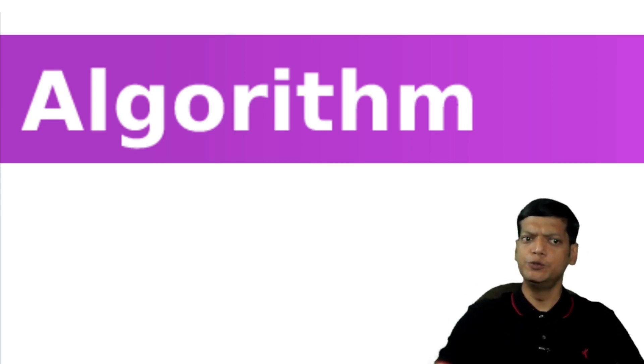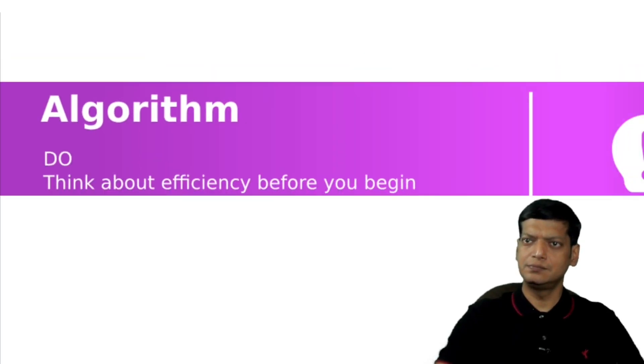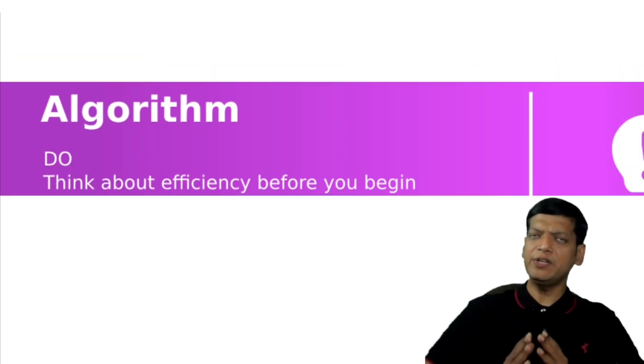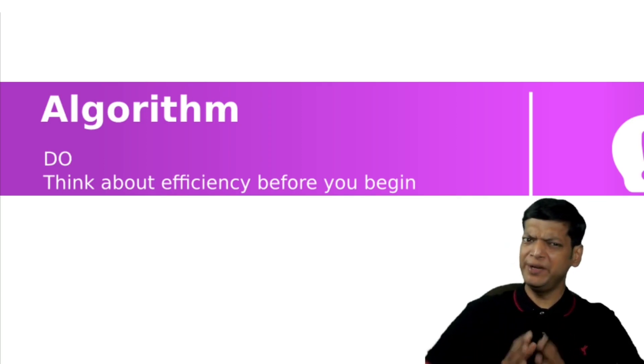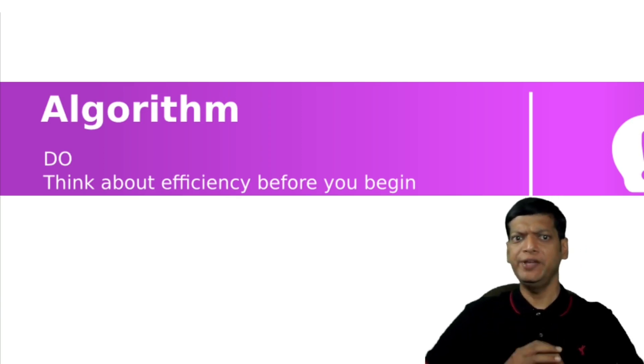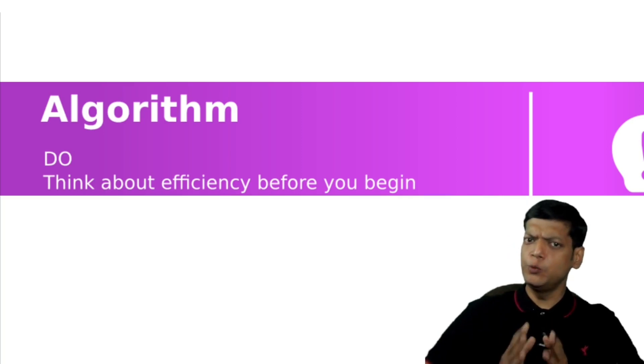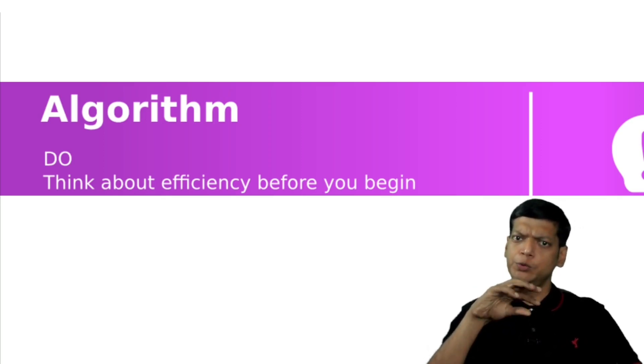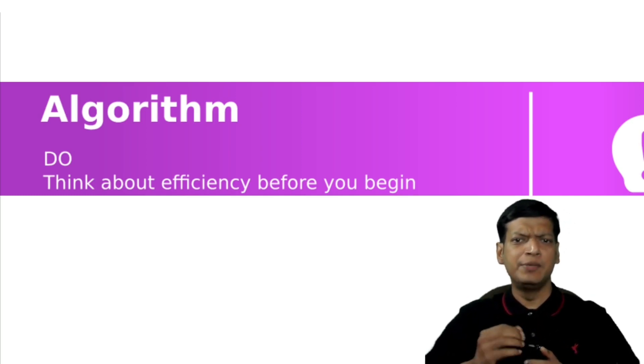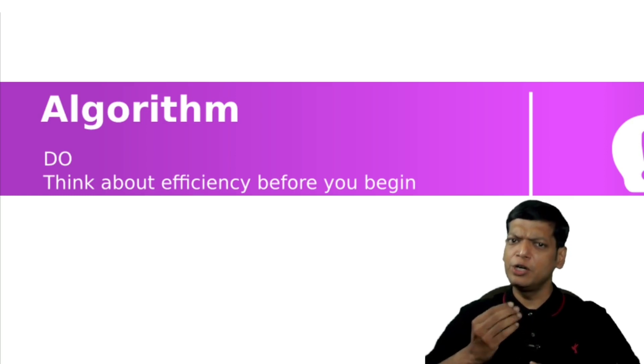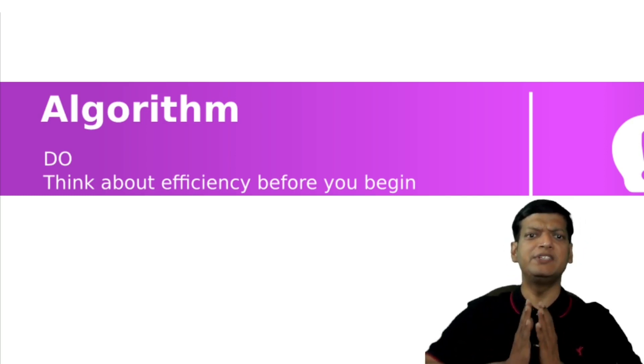So, let's talk about the do's. You should think about efficiency before you code the first solution which comes to your mind. Give it a moment and try to think if it's possible to do the task in hand in a better way. Think if a nested loop may be replaced by a simple loop or an if-else ladder can be replaced by an array.